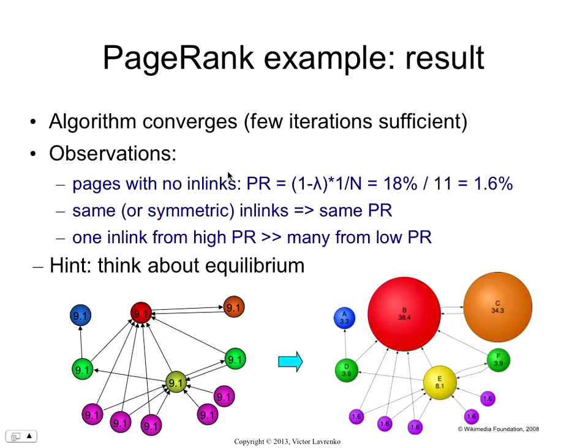And then you get interesting effects — look at node C and node E. Here's democracy in action. Node E is popular; lots of nodes point to E, but they're all relatively low PageRank nodes. That's your populist candidate. Node C, on the other hand, nobody likes except B. And B happens to be a fat cat — at each iteration B gives all of its PageRank to C. As a result, the final PageRank of C is a lot higher than E. So having a link from Slashdot is better than having a million links from a million different bloggers. That's the lesson as far as PageRank is concerned.